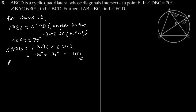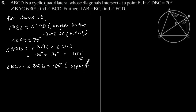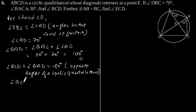Now, angle BCD plus angle BAD is 180 degrees, since the sum of opposite angles of a cyclic quadrilateral is 180 degrees. This gives angle BCD plus 80 degrees is equal to 180 degrees, which gives angle BCD equal to 80 degrees.